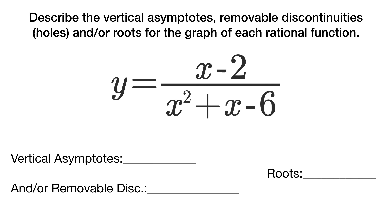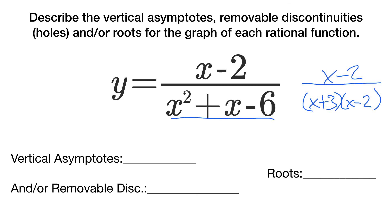For the next one: factor the denominator to get x plus 3 times x minus 2, all over x minus 2. The x minus 2 factors cancel, giving a removable discontinuity at x equals positive 2. The remaining x plus 3 in the denominator has not been cancelled, so it is a vertical asymptote at x equals negative 3. There are no numerator factors remaining, so there are no roots.